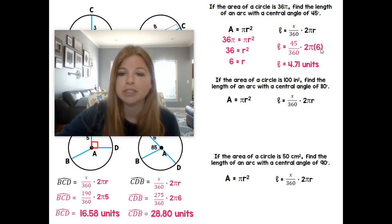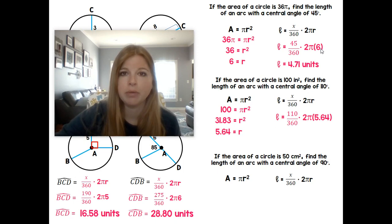If the area of a circle is 100 inches squared, find the length of an arc with a central angle of 110 degrees. So 100 equals πr². Divide both sides by π. I am rounding to my hundredth place for this. Take the square root. R is about 5.64. Let's go ahead, plug our values in. And definitely you want to be using your calculator for this to get all of your values. We should be getting 10.83.